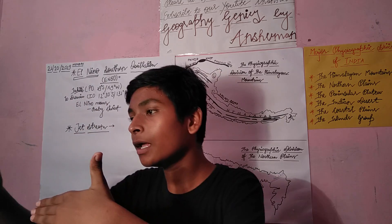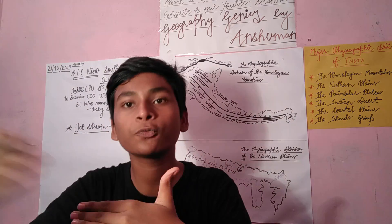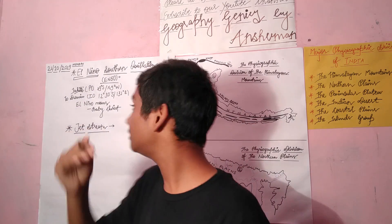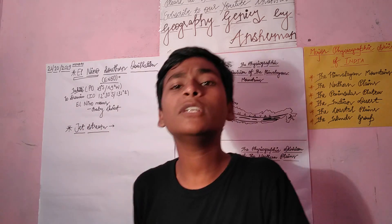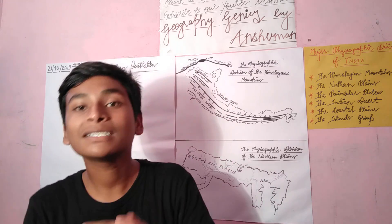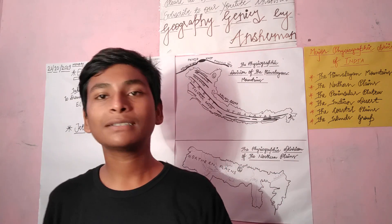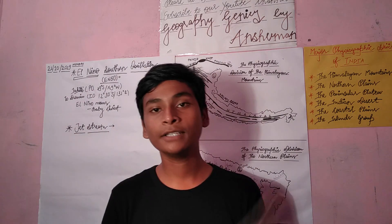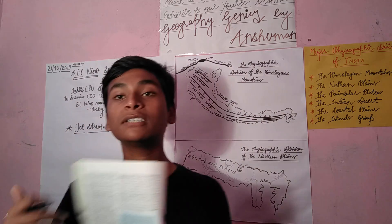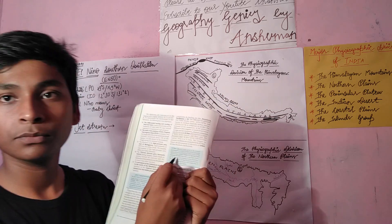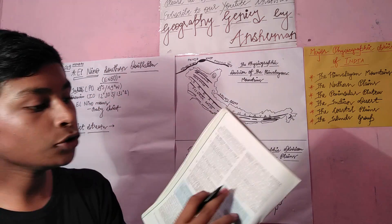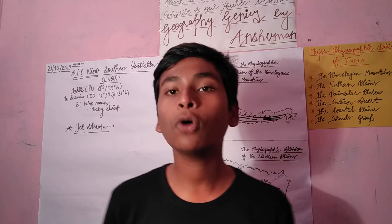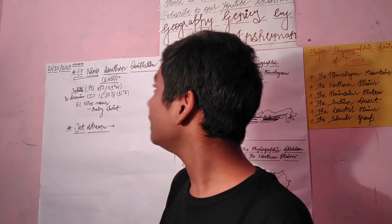The Peruvian Current is the ocean current found on the coast of Peru. To replace that current, this new current — El Niño — emerges. It actually starts at the time of Christmas, which is why it is named El Niño, meaning baby Christ. This oscillation occurs every 2 to 5 years, and that is what Southern Oscillation in ENSO means.